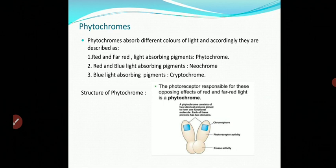Neochromes are blue light absorbing pigments. Blue light absorbing pigments are called cryptochromes. So there are three types: first, phytochrome; second, neochrome; and third, cryptochrome. The structure of phytochrome will now be discussed.